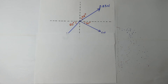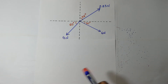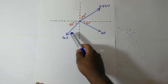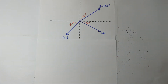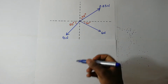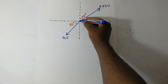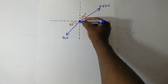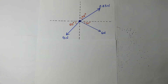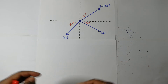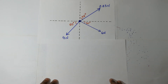So we have another worked example on resolving forces. We are having these three forces: we have a four Newton force, the six Newton force, and this 2.83 Newton force. They are all acting on this point that is at the origin, and we are being required to find the resultant force.